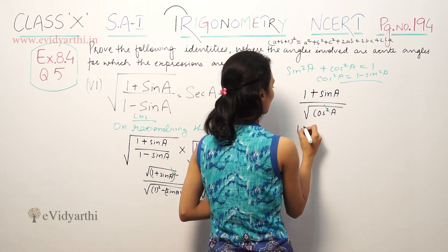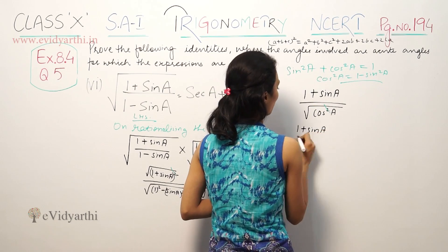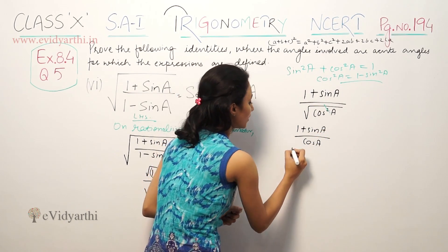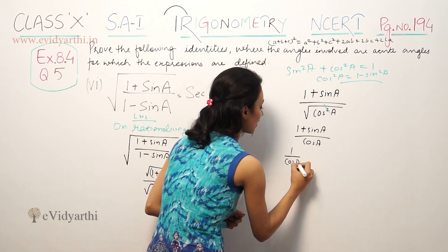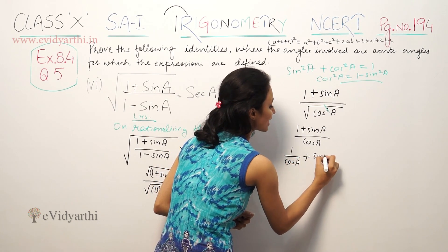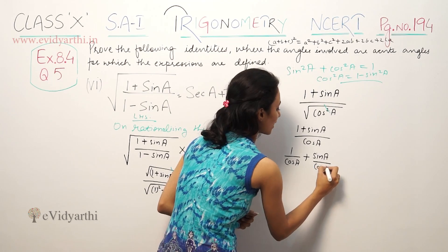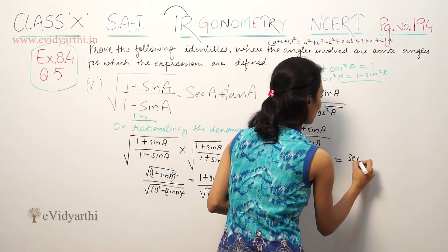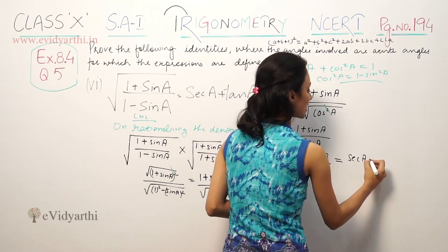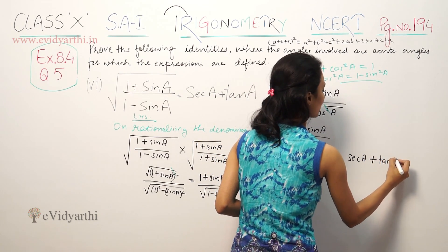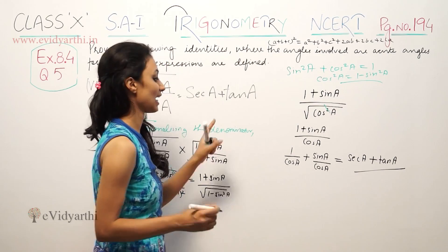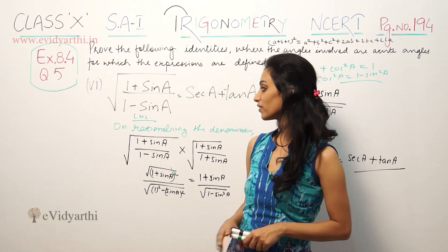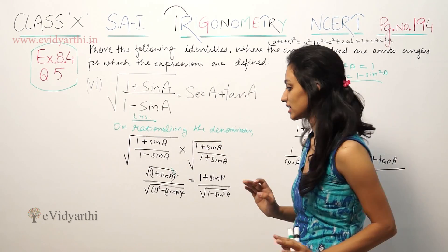So you have (1 plus sin A) upon cos A, which gives us 1 upon cos A plus sin A upon cos A. So 1 by cos A is secant A, and sin A by cos A is tan A. So secant A plus tan A. So when roots come, you have to rationalize it.